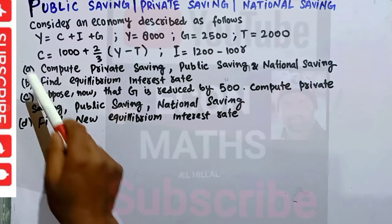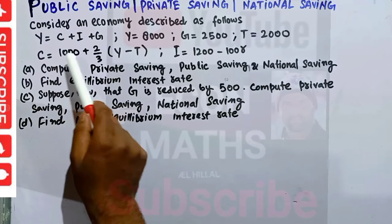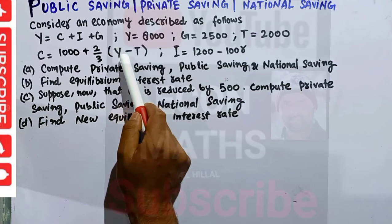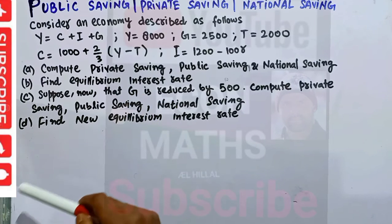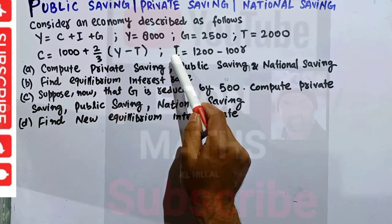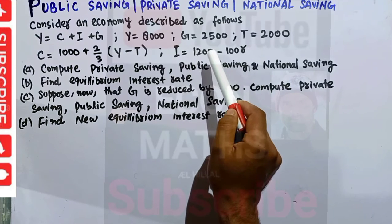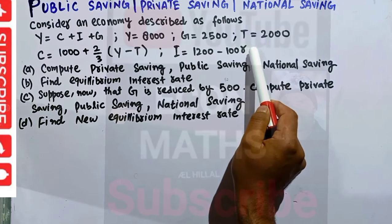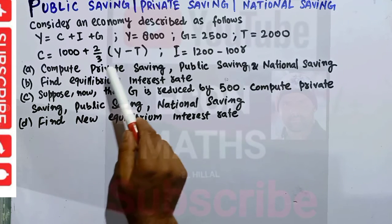The tax is lump sum. The consumption function is C equals 1000 plus two-thirds of (Y minus T), where two-thirds is the marginal propensity to consume. Investment is a function of the rate of interest: I equals 1200 minus 100r, where r denotes the rate of interest. We have to compute private savings, public savings, and national savings first.